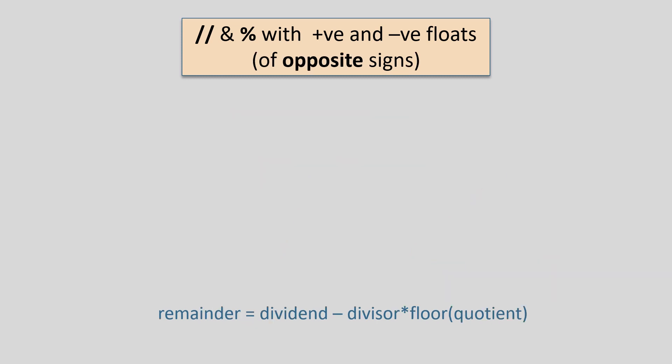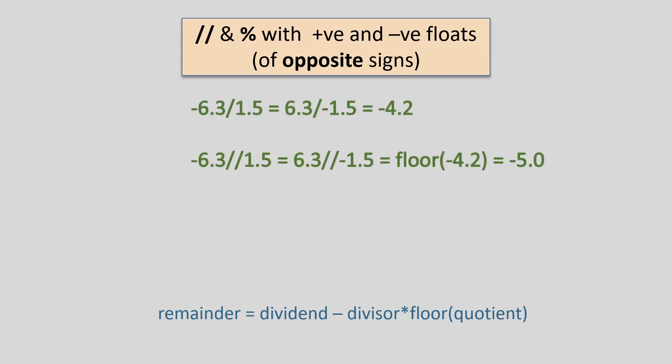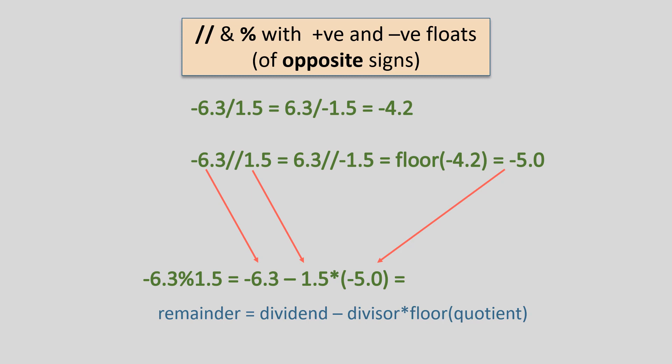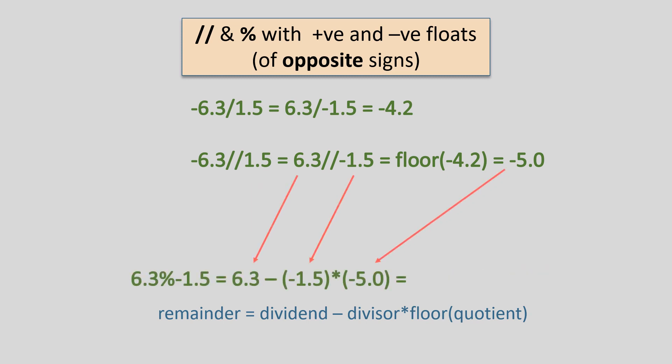If the operands have opposite signs, like minus 6.3 and 1.5 or 6.3 and minus 1.5, division returns the negative quotient minus 4.2, and the floor division returns the floor of that, which is minus 5.0. In the case of minus 6.3 and 1.5, the remainder is minus 6.3 minus 1.5 times minus 5.0, which is 1.2. In the case of 6.3 and minus 1.5, the remainder is 6.3 minus minus 1.5 times minus 5.0, which is minus 1.2.